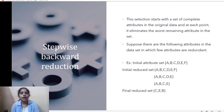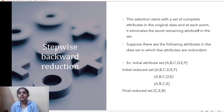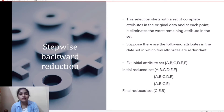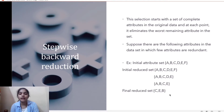Stepwise backward elimination works in the opposite direction: selection starts with the complete set of attributes — here {a, b, c, d, e, f} — and we eliminate the least important attribute at each step. First f is removed, then d, and after removing all unimportant attributes, we are left with {c, e, b}.